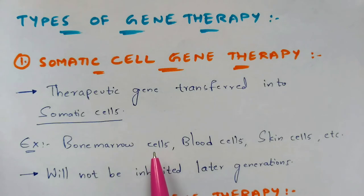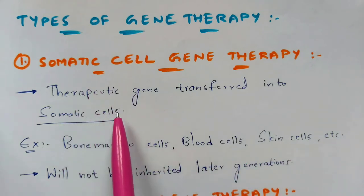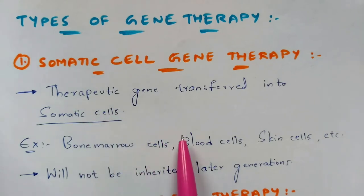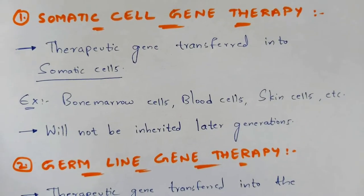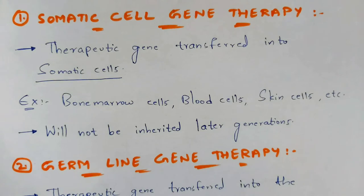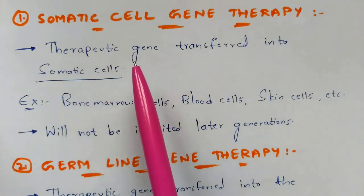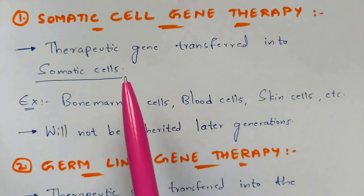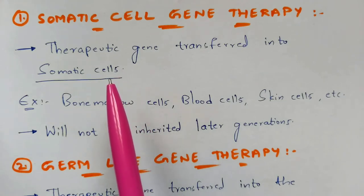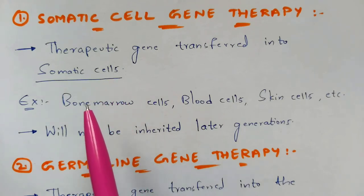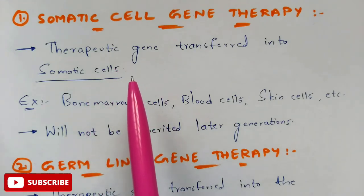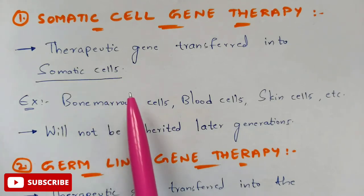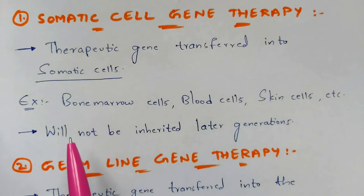Examples of somatic cells include bone marrow cells, blood cells, and skin cells. The therapeutic or functioning gene is transferred into one of these chosen cells. One important thing to remember about somatic cell gene therapy is that it will not be inherited into later generations — there is no guarantee that the disease will or will not be passed to future offspring.